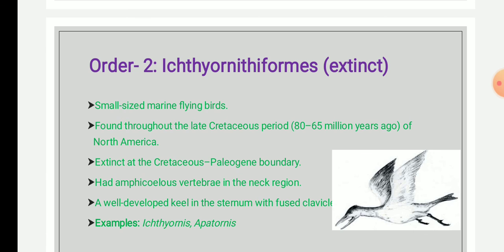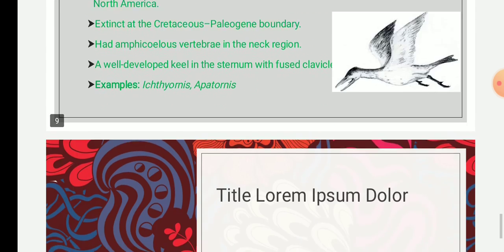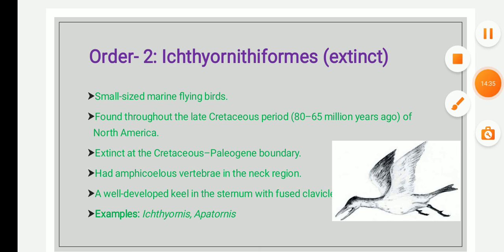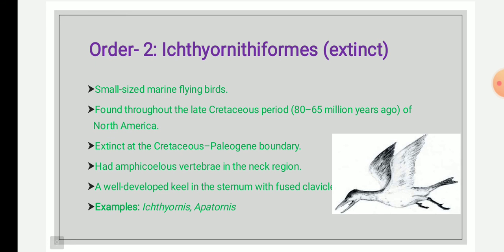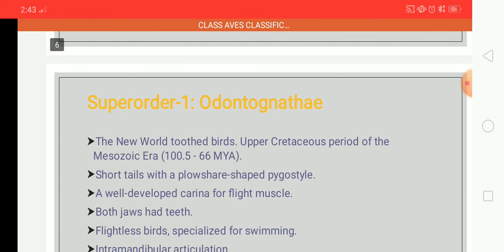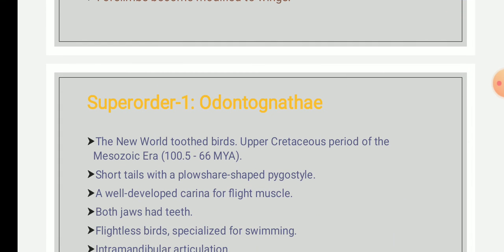The given picture is of Ichthyornithiformes. That is enough for today's lecture. In the next lecture, we will continue the classification of Aves. We have completed only super order 1, so three super orders are remaining.